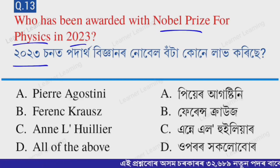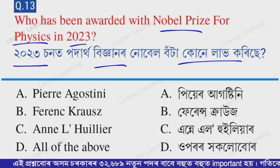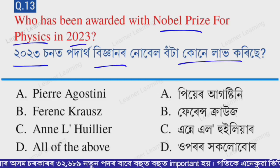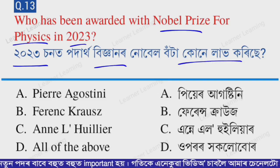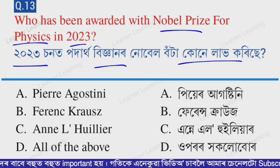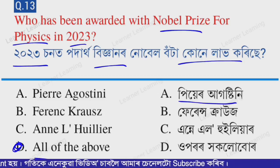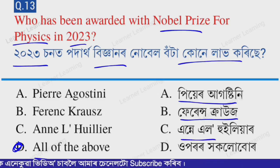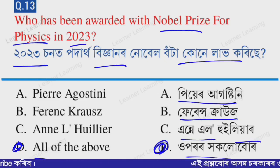Next question: Who received the Nobel Prize in Physics 2023? Options: A — Pierre Agostini, B — Ferenc Krausz, C — Anne L'Huillier, D — All of the above. The correct option is option D — All of the above. Pierre Agostini, Ferenc Krausz, and Anne L'Huillier all received the Nobel Prize in Physics in 2023.